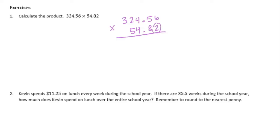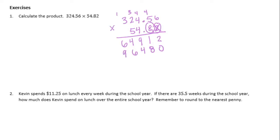Start with the two: two times six is twelve, carry the one. Two times five is ten, plus one is eleven, carry the one. Two times four is eight, plus one is nine. Two times two is four. Two times three is six. Done with two, on to eight. Put down my zero. Eight times six is forty-eight, carry the four. Eight times five is forty, plus four is forty-four, carry the four. Eight times four is thirty-two, plus four is thirty-six, carry the three. Eight times two is sixteen, plus three is nineteen, carry the one. Eight times three is twenty-four, plus one is twenty-five.